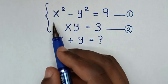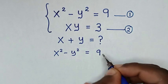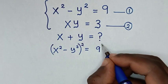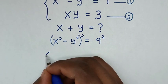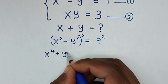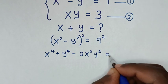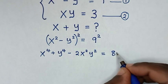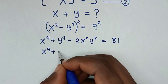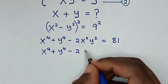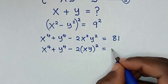Then from equation 1, which is x squared minus y squared is equal to 9, we square both sides. So when we expand, x squared minus y squared, the whole square, it will be x to the power 4 plus y to the power 4 minus 2 x squared y squared, which is equal to 9 squared, which is 81.